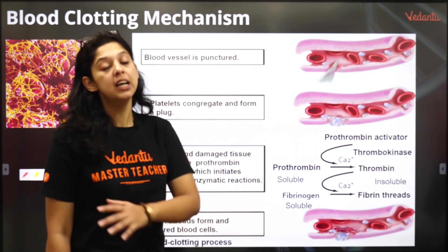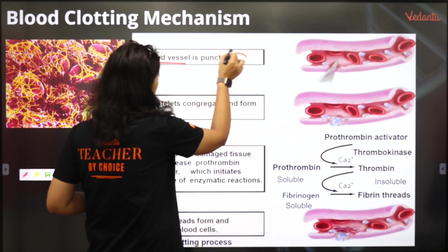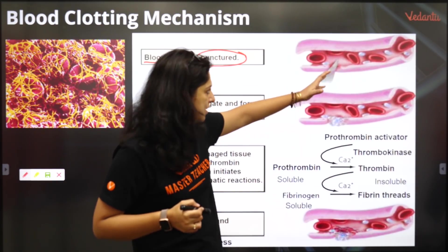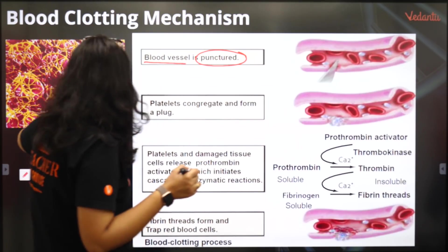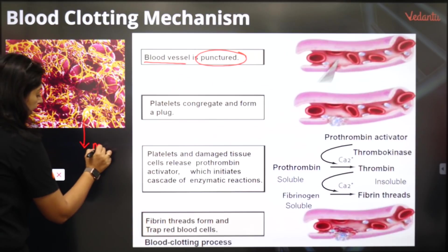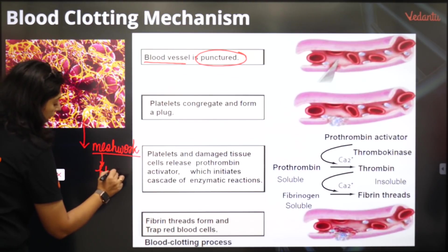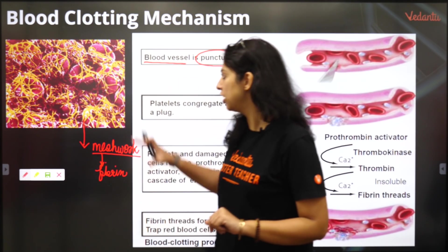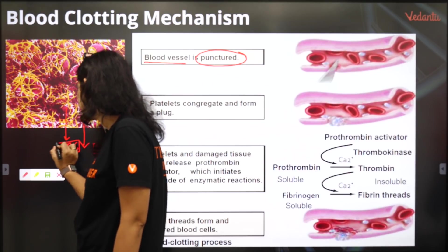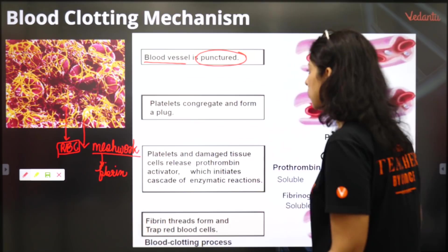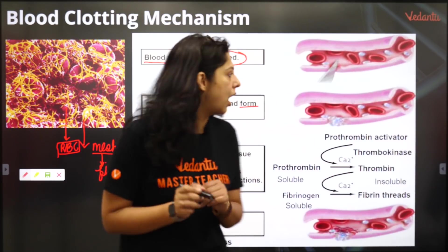Whenever there is an injury — it could be a puncture injury, it could be an injury of great impact or force — any of these injuries could puncture, injure, or cut the blood vessel. These are the RBCs which are flowing and suddenly it is cut. So the platelets have to aggregate. Can you see this mesh work here? This yellow color ki jali — let me call it a mesh work. This mesh work is made up of fibrin threads, and in this fibrin thread mesh work the RBCs have got trapped, which forms a clot. The platelets congregate, come close, and form a plug.